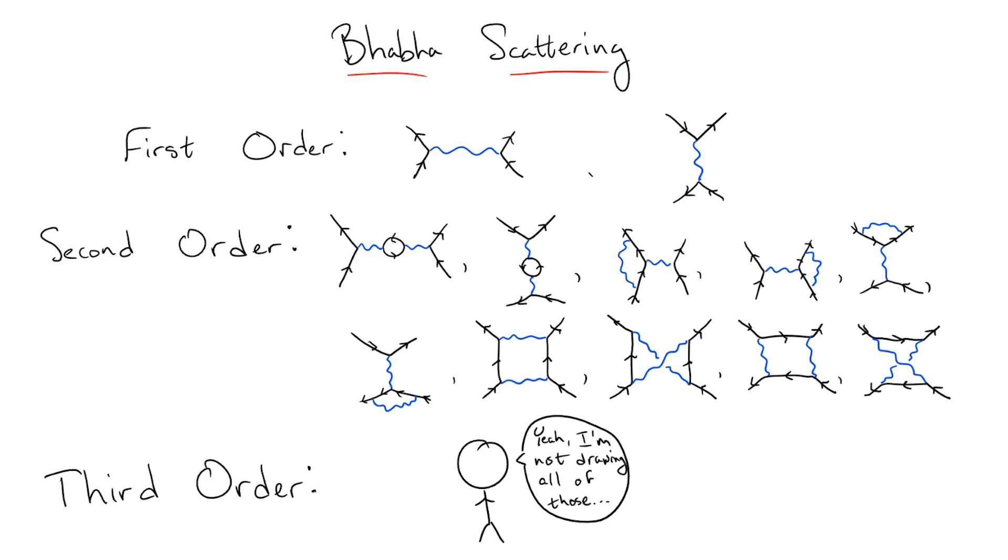And this is only for the very simple case of QED with only electrons and positrons. If we look at the full standard model, we already have over a thousand Feynman diagrams for this process at only second order. So, we can see that Feynman diagrams can very quickly become quite computationally expensive.